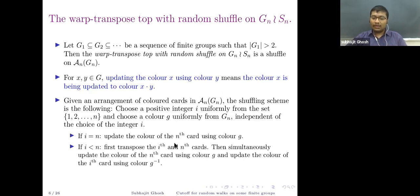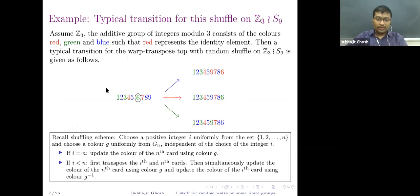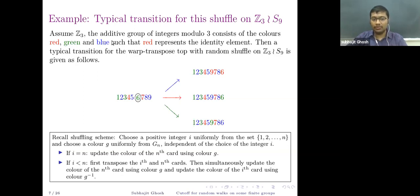If we chose the last card (i = n), we just update the color of the last card using color g. If we chose the i-th card with i < n, we first transpose the i-th card with the n-th card, and then simultaneously update the color of the last card using g and the color of the i-th card using g^{−1}.